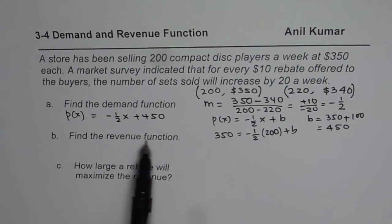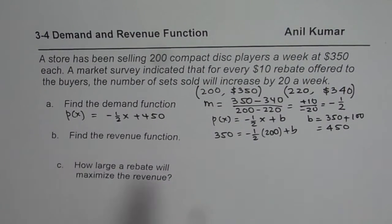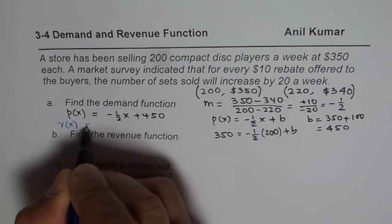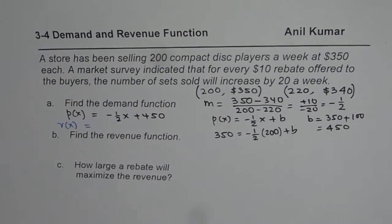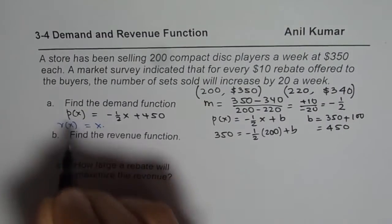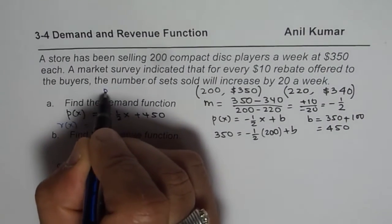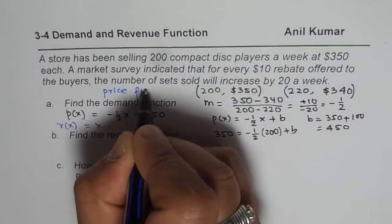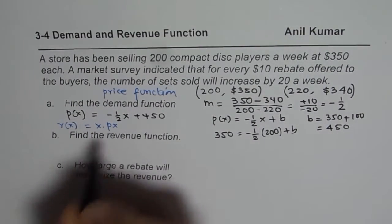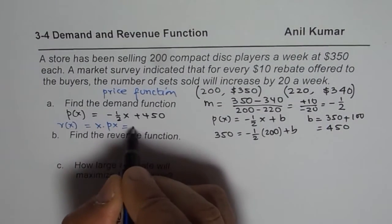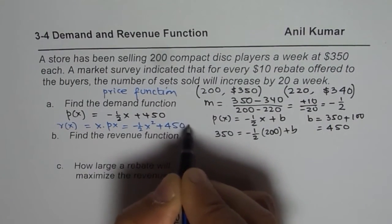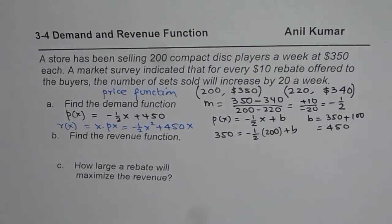Now we need to find the revenue function. Revenue r(x) is the amount you get after selling the items — if you sell x items at price p(x), then r(x) = x · p(x). Multiplying out: r(x) = x(-x/2 + 450) = -x²/2 + 450x. That is our revenue function.